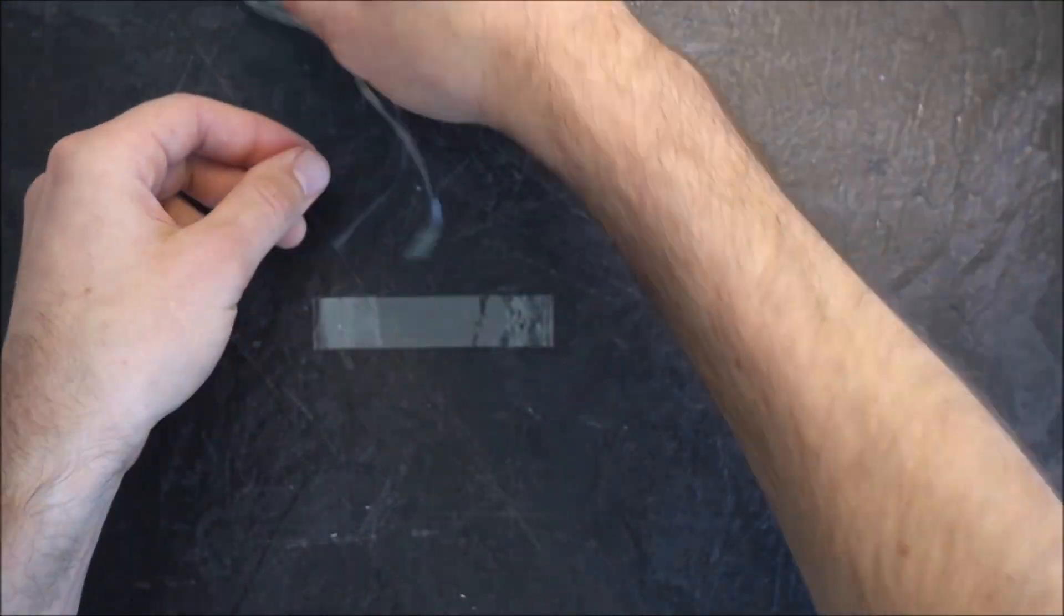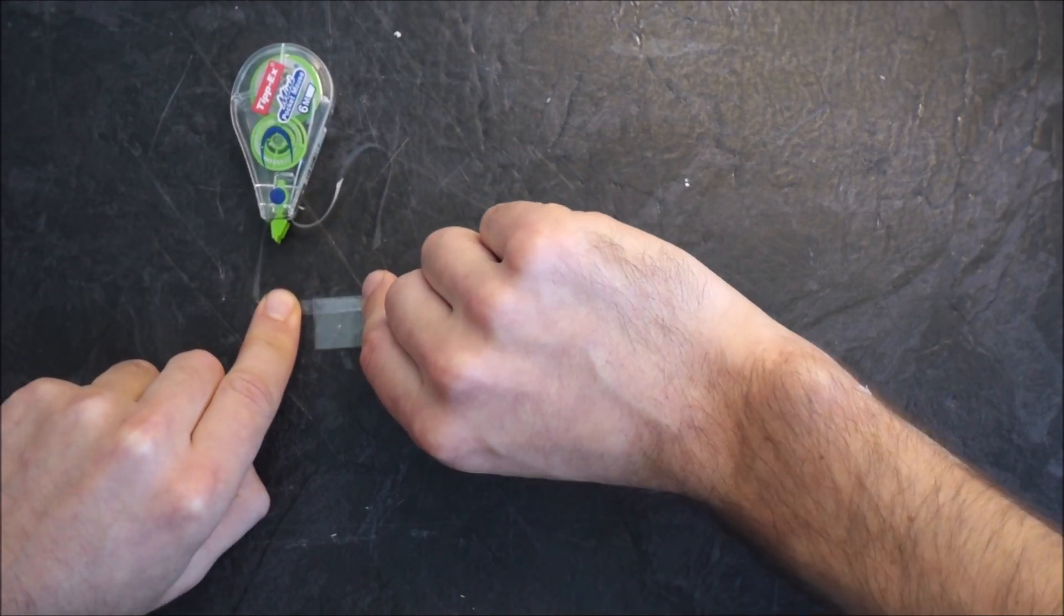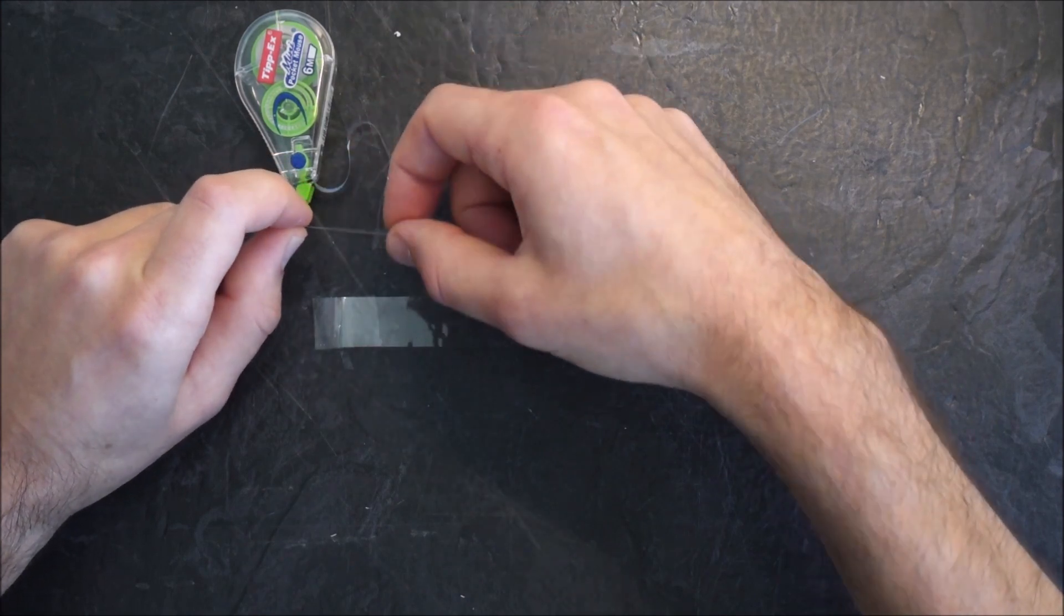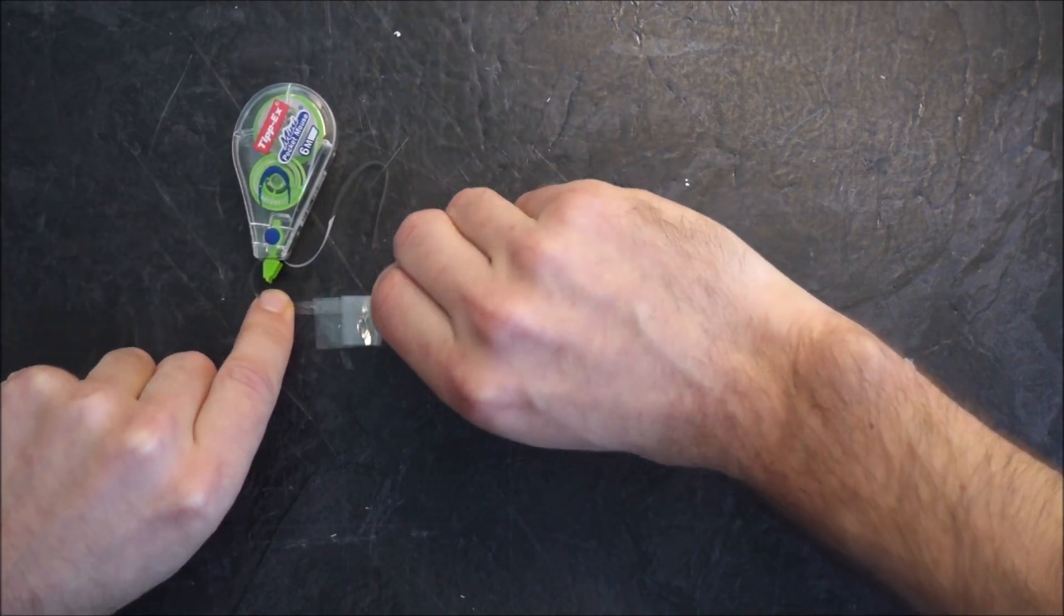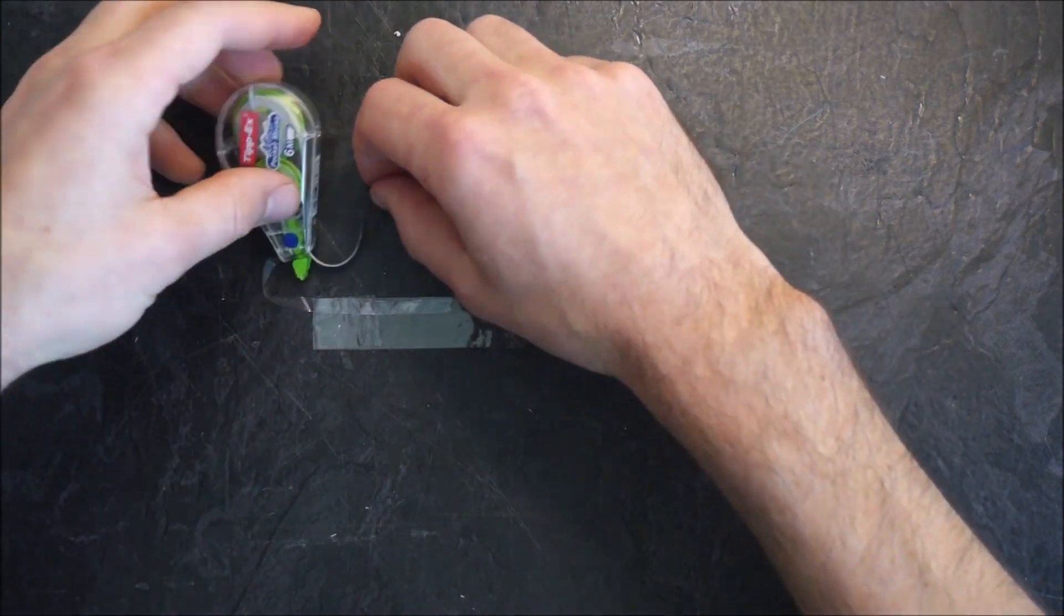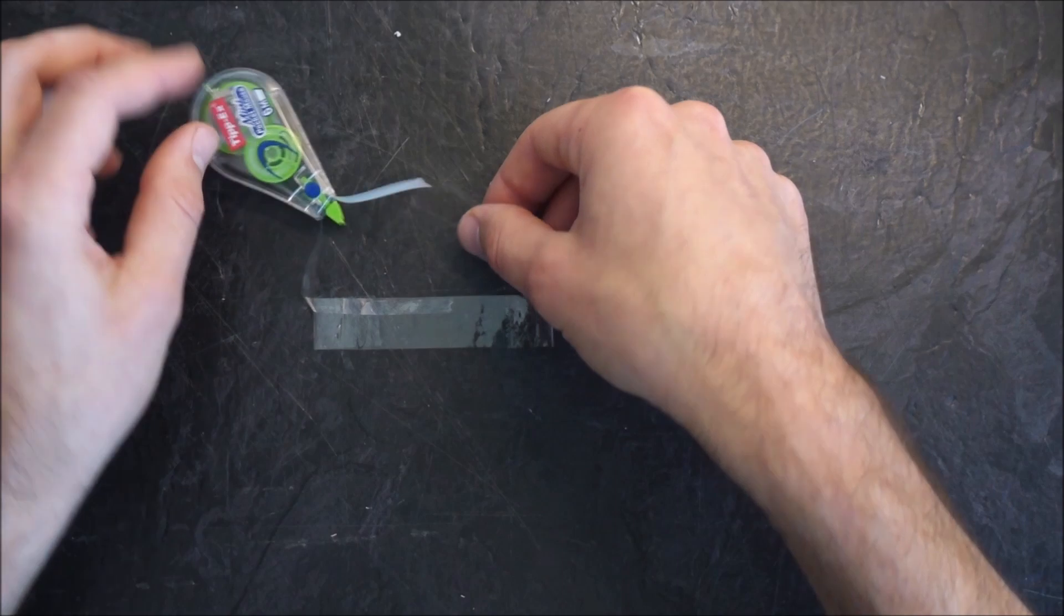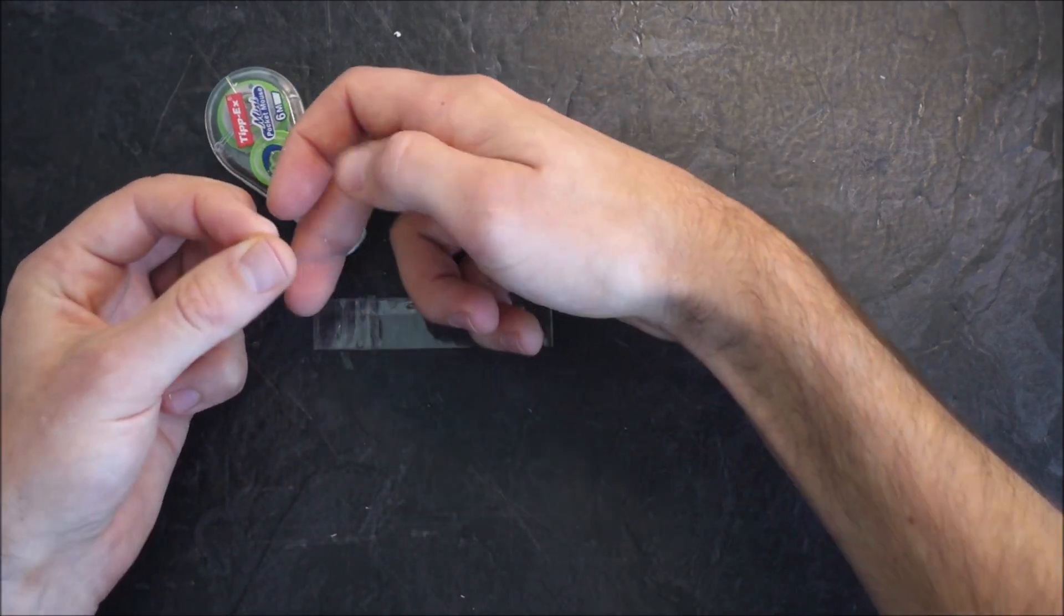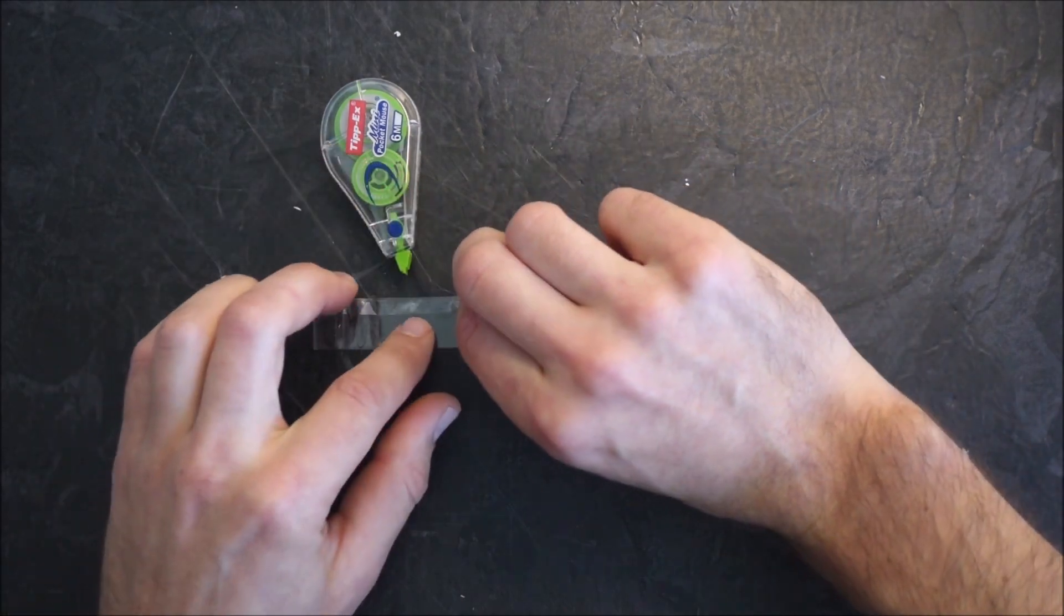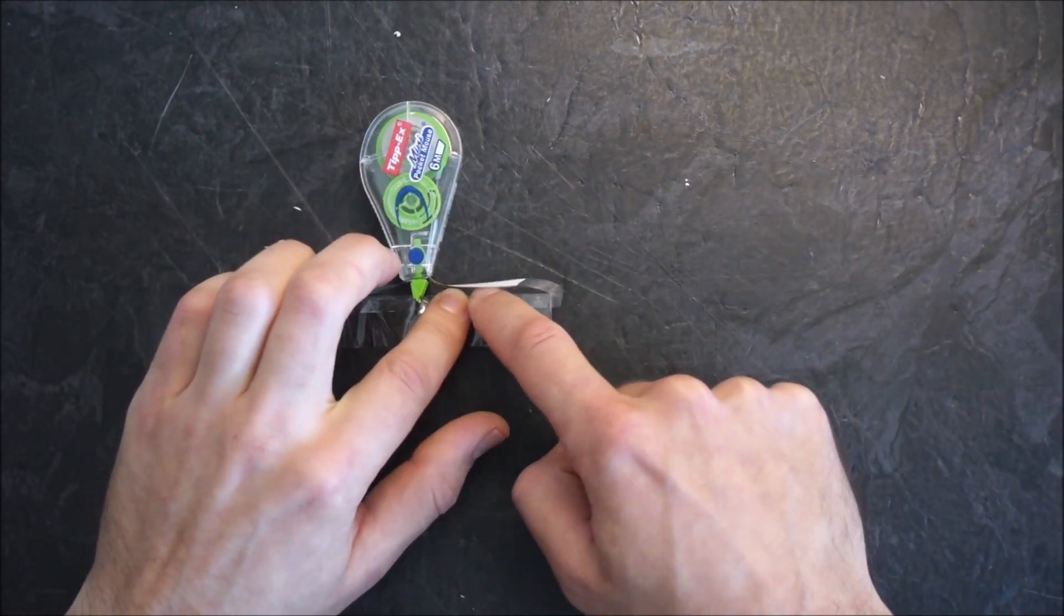Take one end of this and place it along the edge of this tape, about halfway across. Then take the other side, being careful not to twist it. We want a nice, flat, continuous band. Tape it right to the end, just like that.